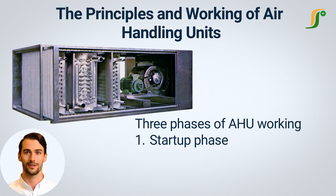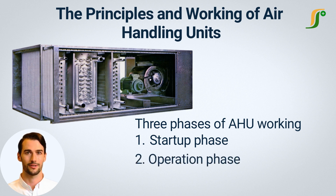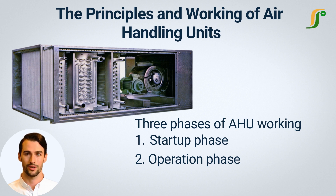After startup, the air handling unit runs continuously until it is required to shut down. In the operation phase, the fan and filters run at a specified speed to maintain the temperature and humidity in the area. The aim of this phase is to maintain the temperature and humidity in the manufacturing area as required.